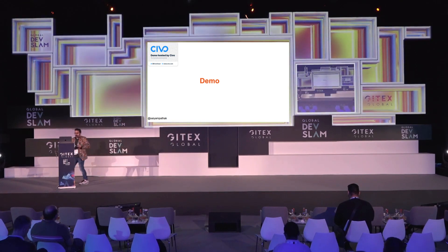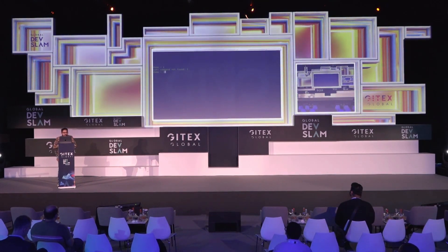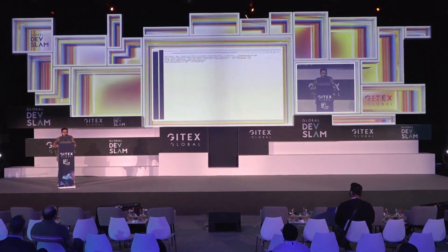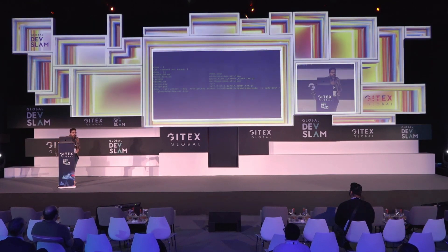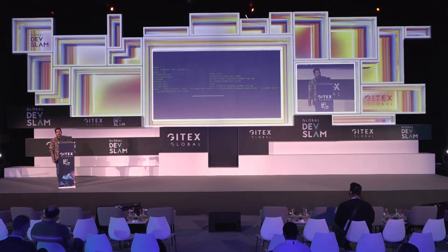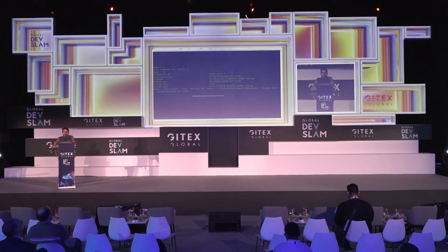Let's see a demo quickly. What we'll do is use SYFT to attest a particular image. It is attesting using my cosign public key and I've given an image. The format I want is SPDX JSON, and I want that exported — written — to a file called something like global-dev-slam.sbom.json. It will use that JSON file to write the SBOM content for this particular image. It is generating right now.